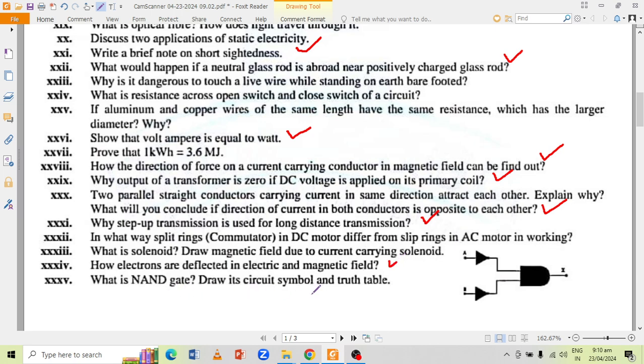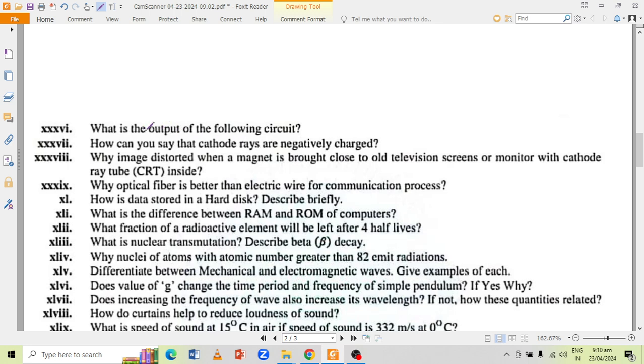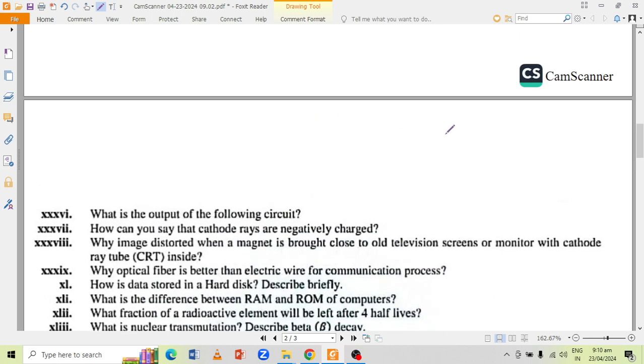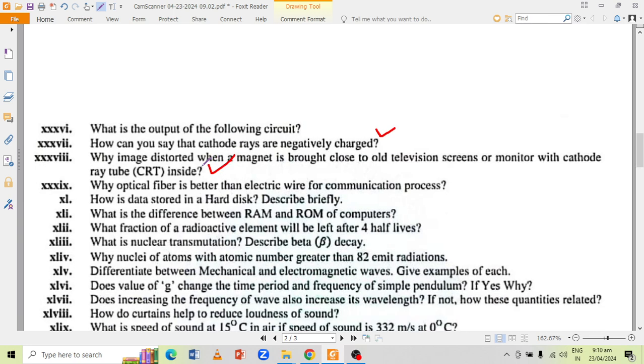What is NAND gate? Draw circuit, symbol and truth table. What is the output of the following circuit? How can you say that cathode rays are negatively charged? Why image is distorted when a magnet is brought close to old television screens or monitor with cathode ray tubes inside? Why optical fiber is better than electric wire for communication process?